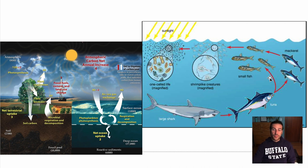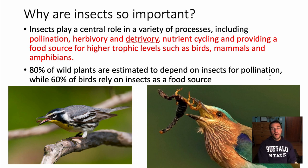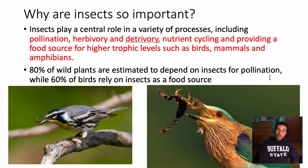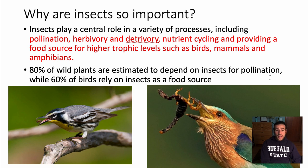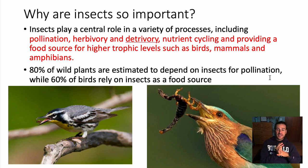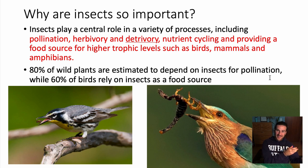Moving into new material: bees aren't the only important insects. Insects play integral roles in every ecosystem. These roles include pollination, herbivory — eating living plant tissues — detritivory, which is helping break down dead organic matter, nutrient cycling, and providing a food source for higher trophic levels. These are very important functions that insects take part in.